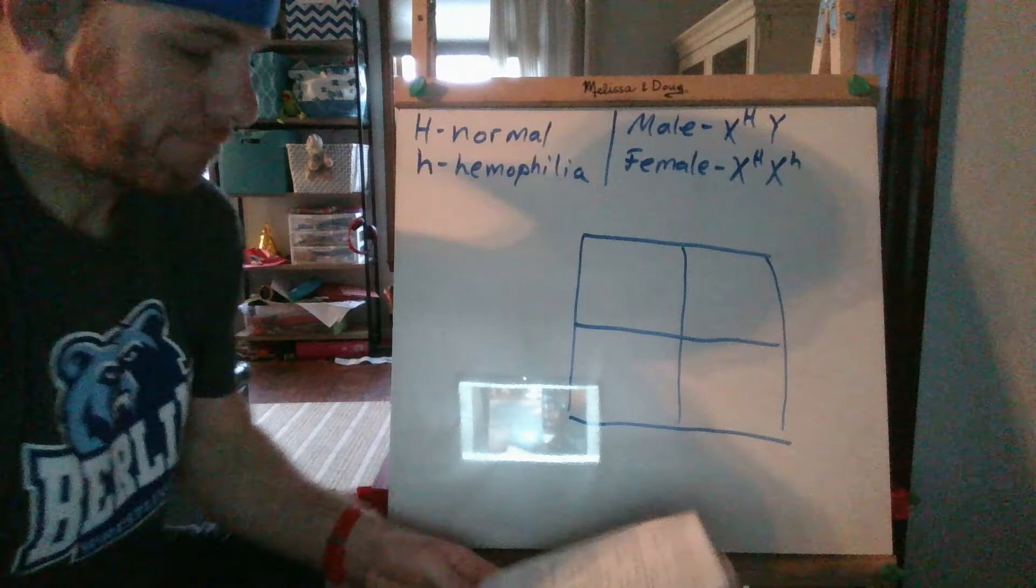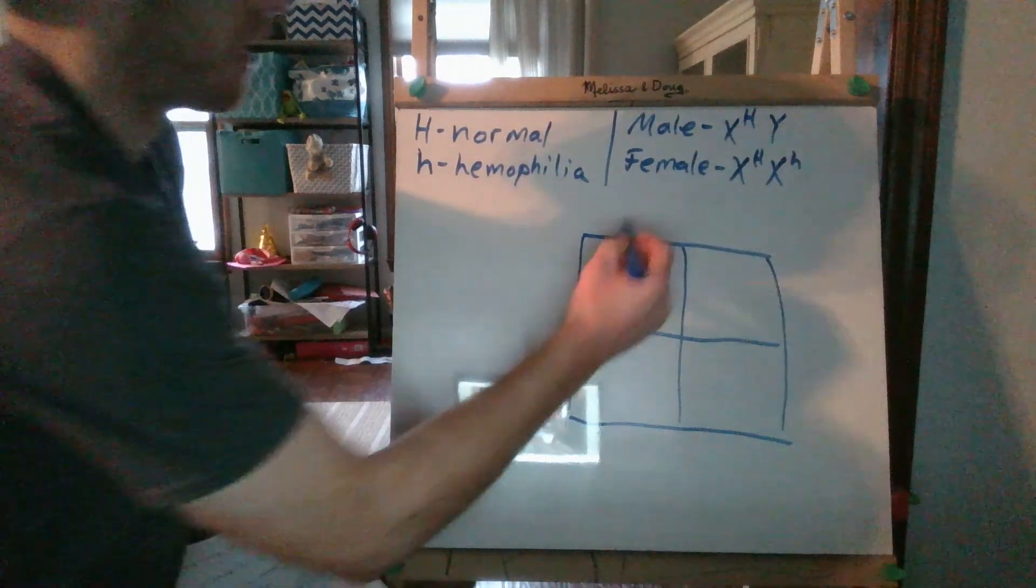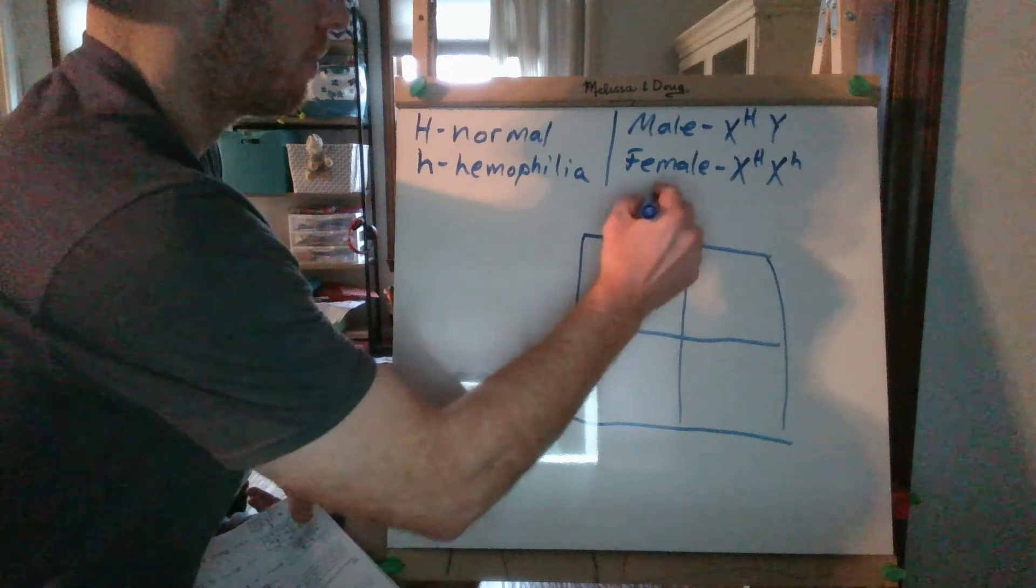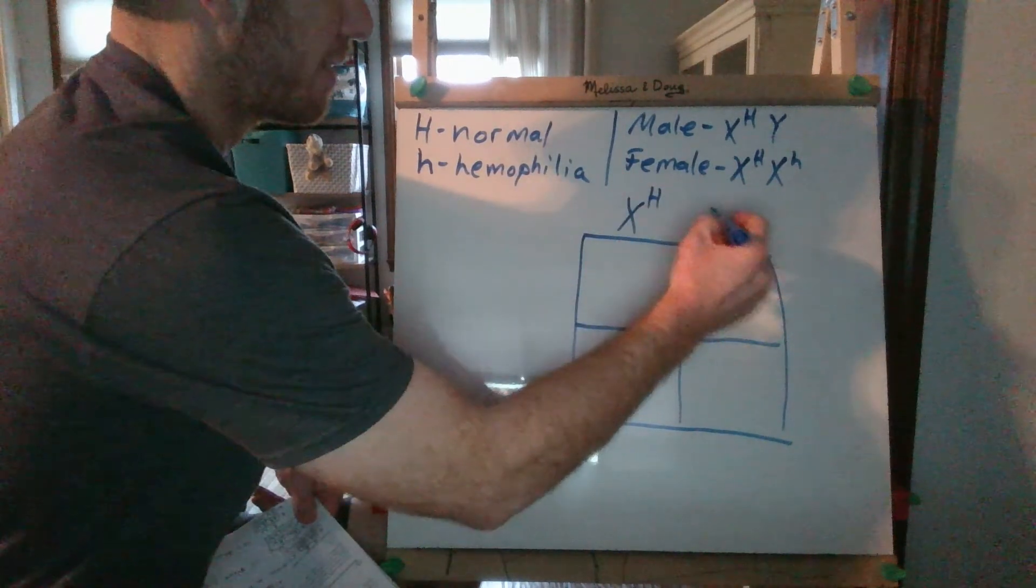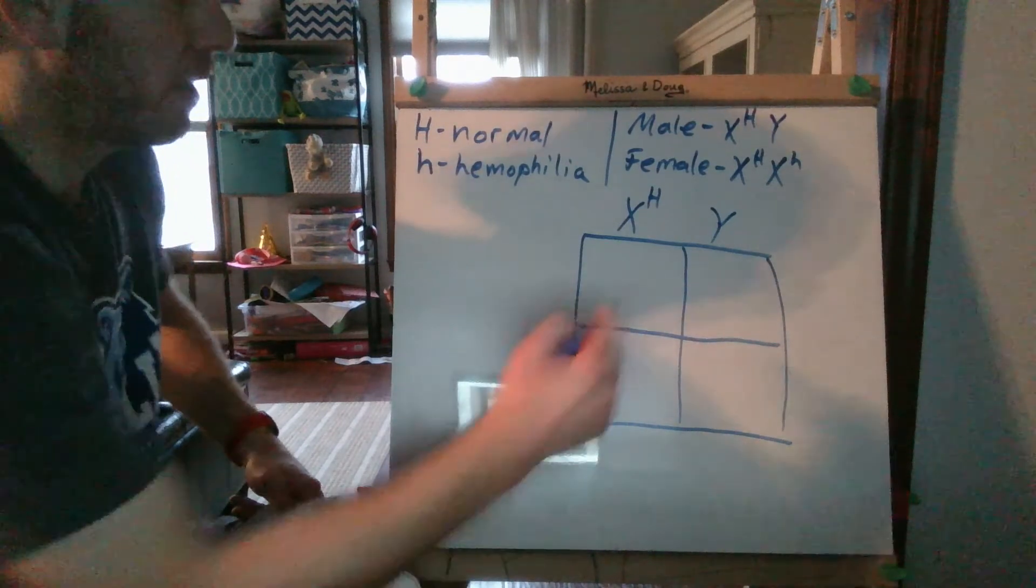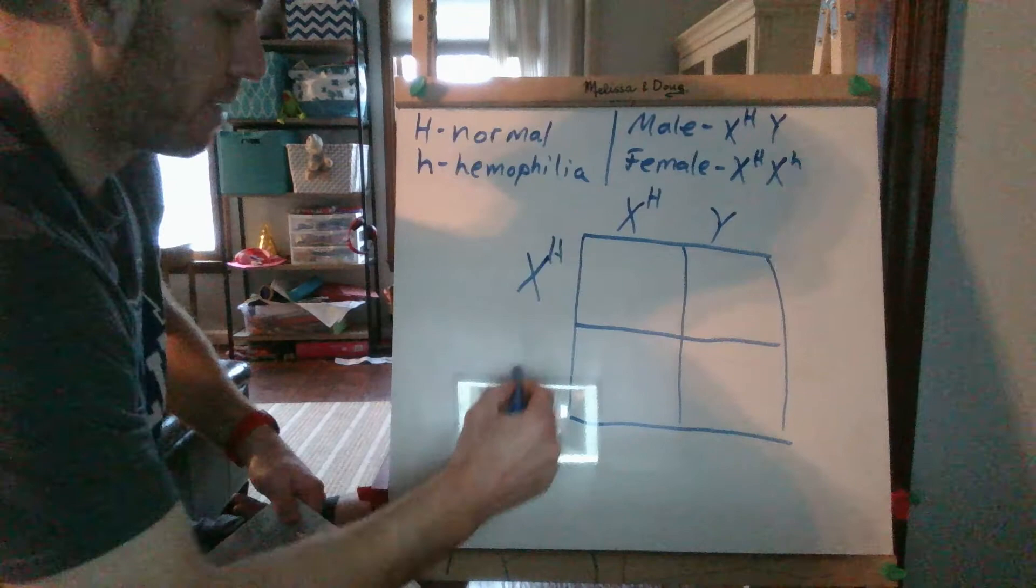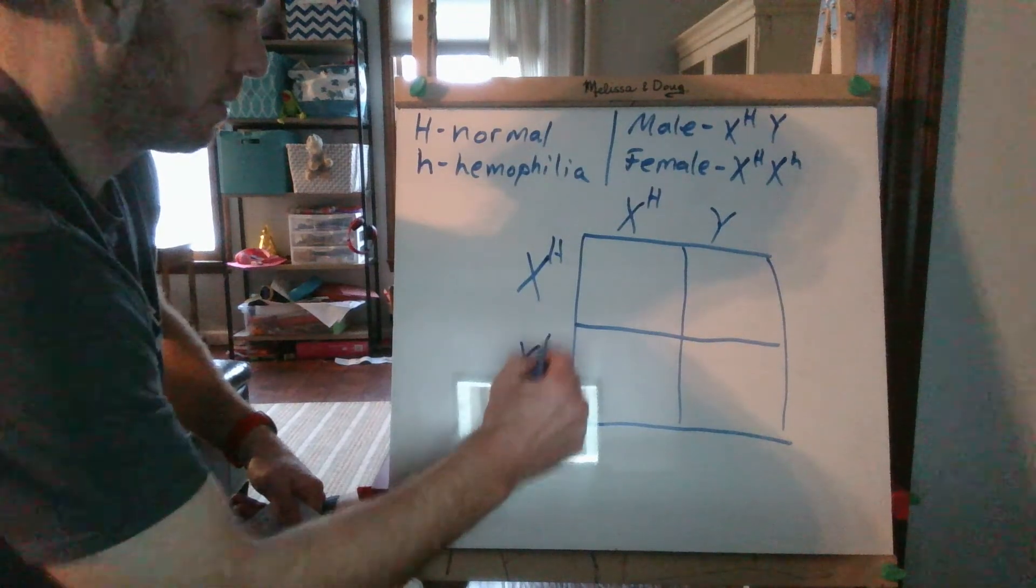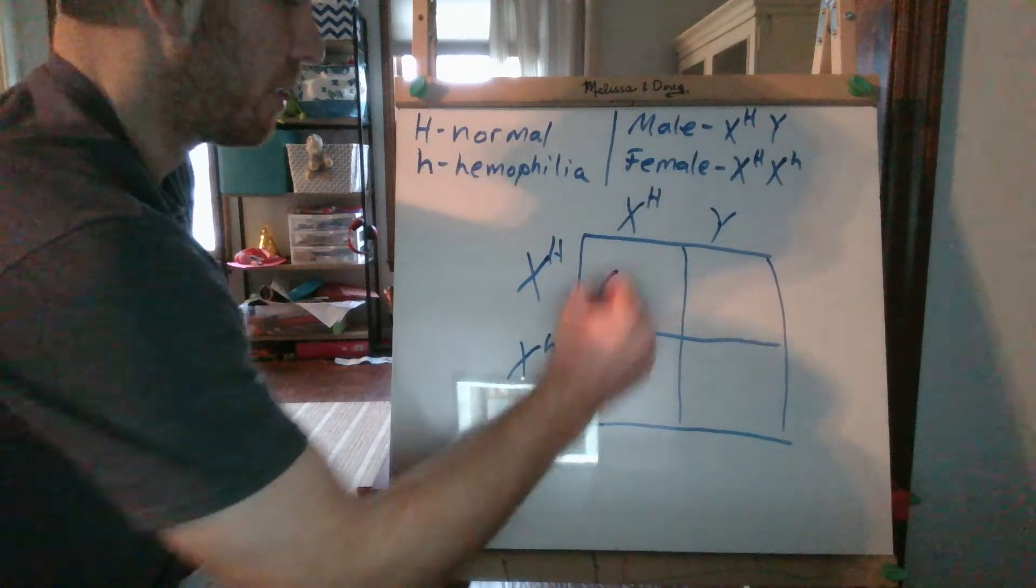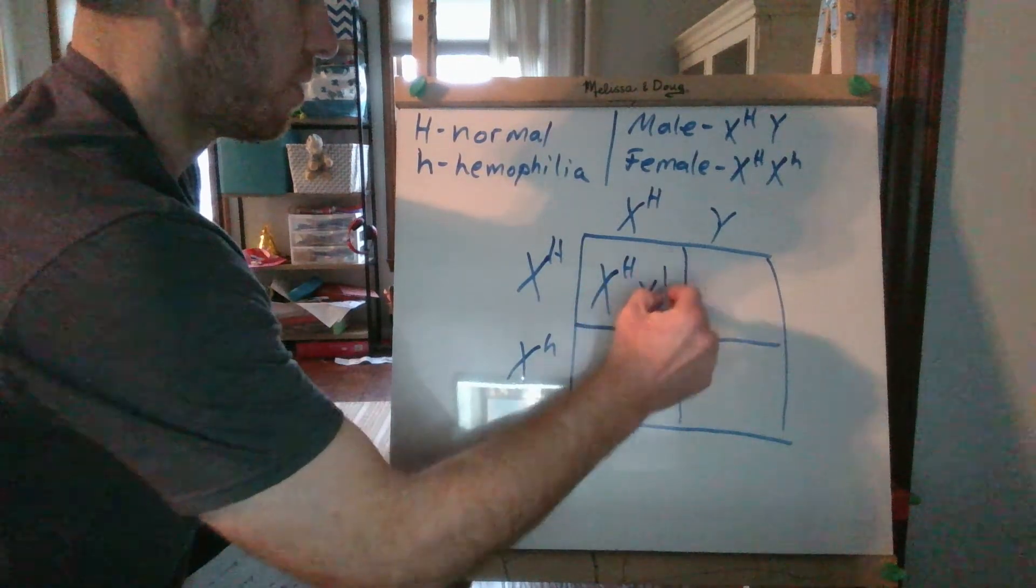The male is X big H, he's normal. Remember, since it's sex-linked, he has nothing on the Y chromosome to match up with that. The female with two X chromosomes is X capital H, X lowercase h. When I complete this Punnett square, I get these results.